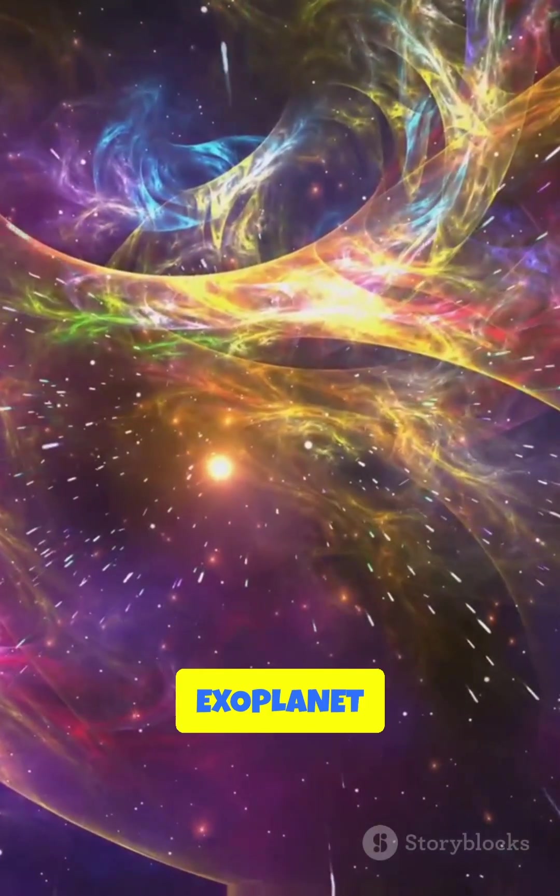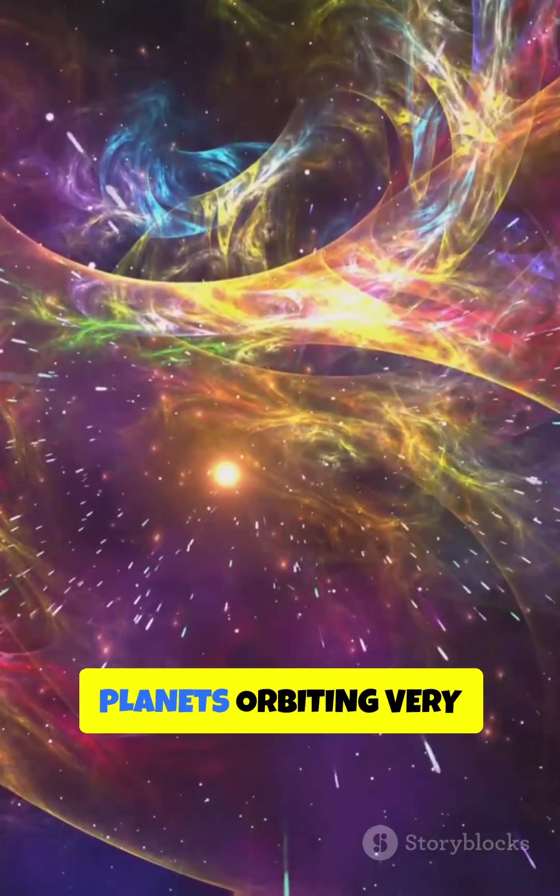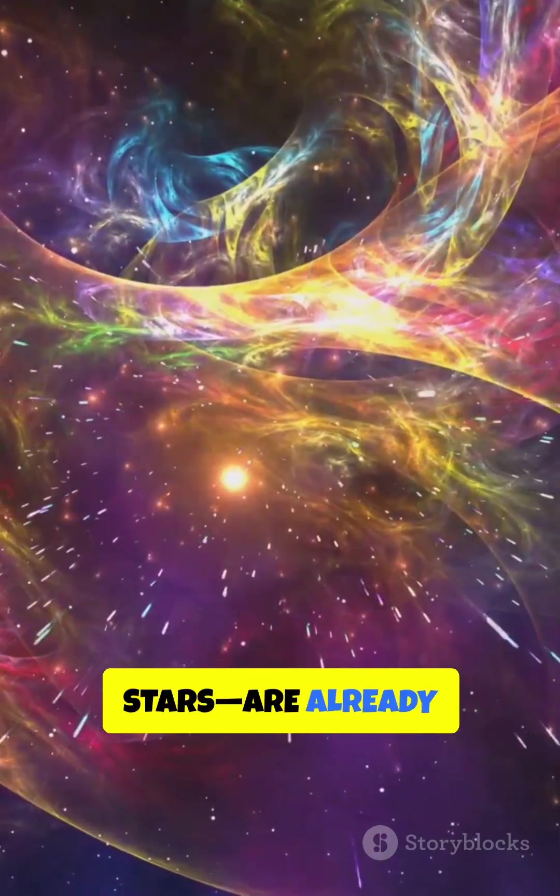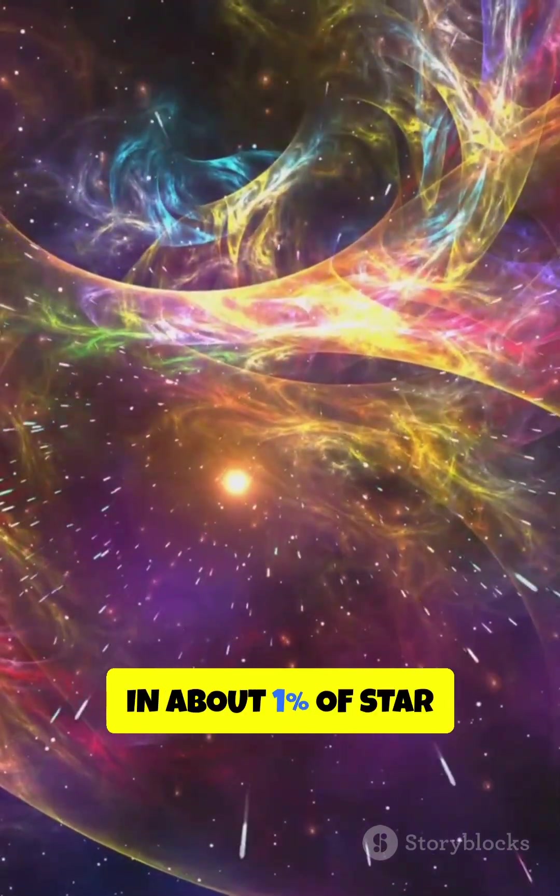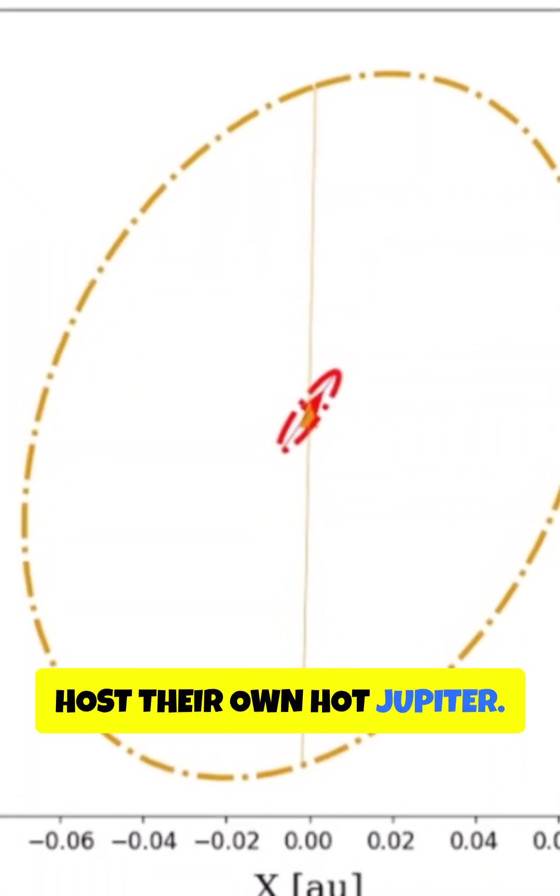Double-hot Jupiters are among the rarest exoplanet configurations known to us. While hot Jupiters, giant gas planets orbiting very close to their stars, are already uncommon, occurring in about 1% of star systems, double-hot Jupiters occur when both stars in a binary system host their own hot Jupiter.